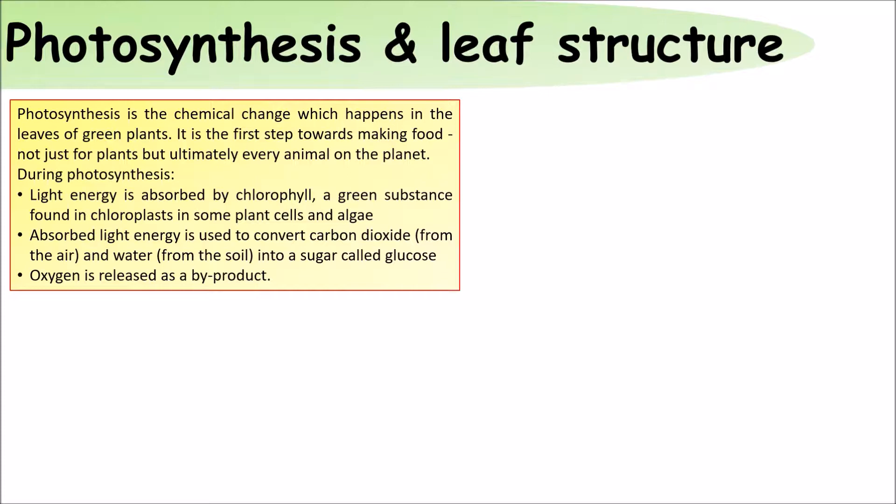In this process, light energy is absorbed. The light energy is used to convert carbon dioxide from the air and water from the soil into glucose, and oxygen is released as a by-product.